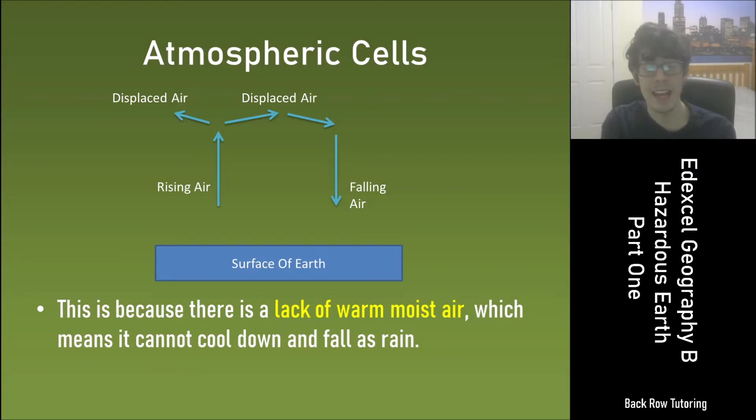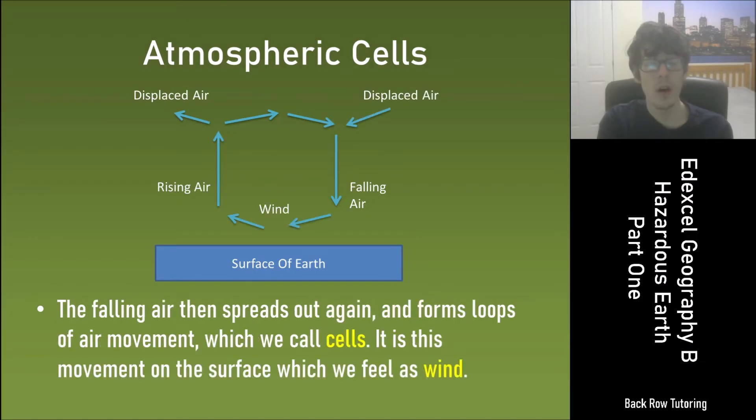This is because there is a lack of warm moist air which means it cannot cool down and fall as rain. The falling air then spreads out again and forms loops of air movement which we call cells. It is this movement on the surface which we feel as wind.